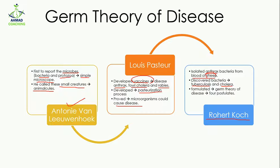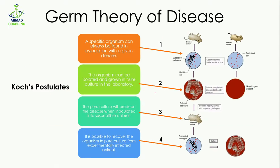On the basis of these observations and all the related history, he formulated the germ theory of disease. This theory has four postulates — postulates meaning four key points. These points are known as Koch's postulates, or the germ theory of disease, so when anyone refers to germ theory of disease, they are referring to Koch's postulates.